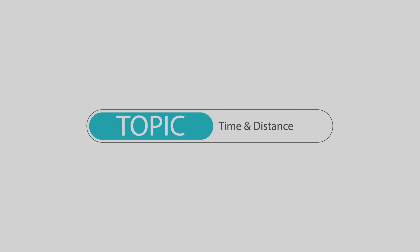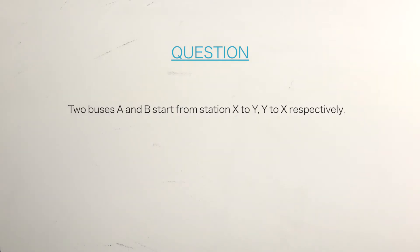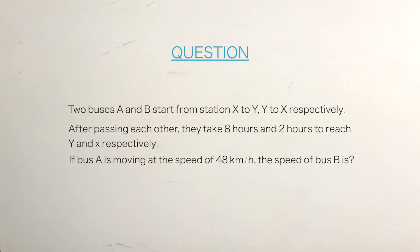Let's look at the question: Two buses A and B start from station X to Y and Y to X respectively. After passing each other, they take 8 hours and 2 hours to reach Y and X respectively. If bus A is moving at a speed of 48 km per hour, what is the speed of bus B?